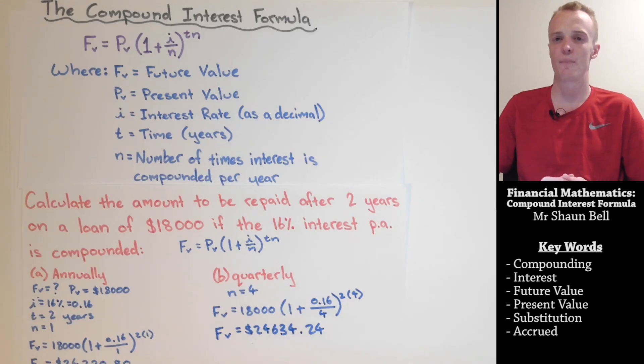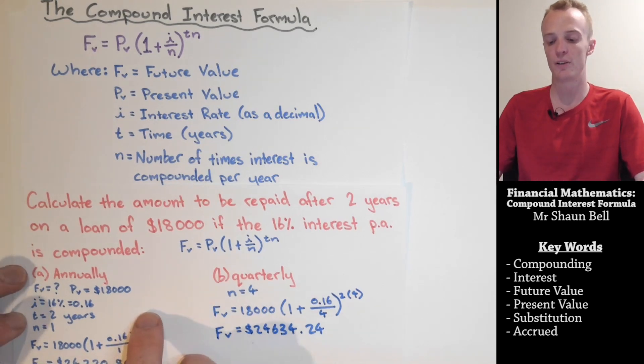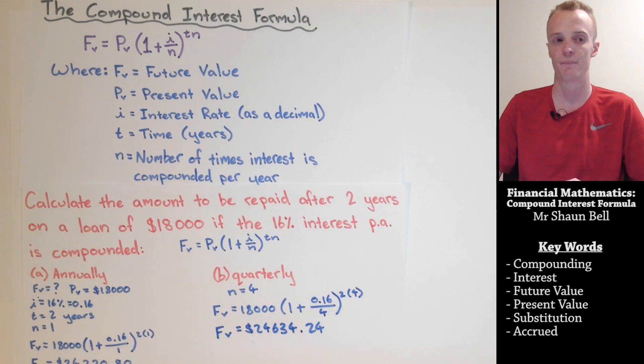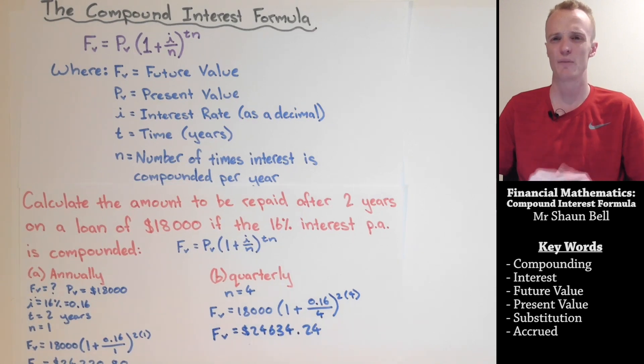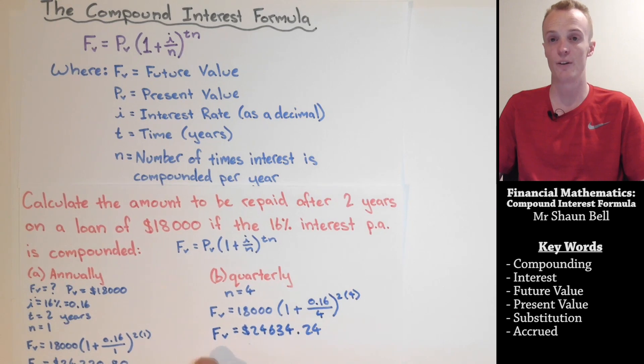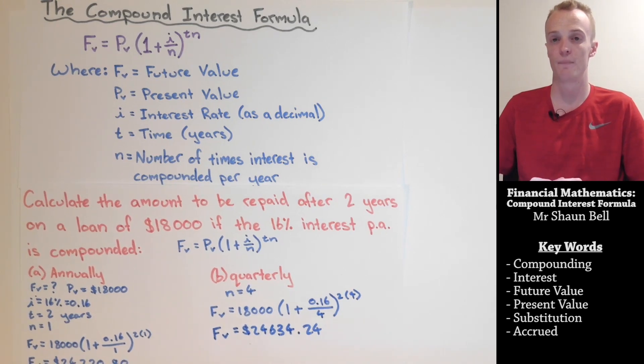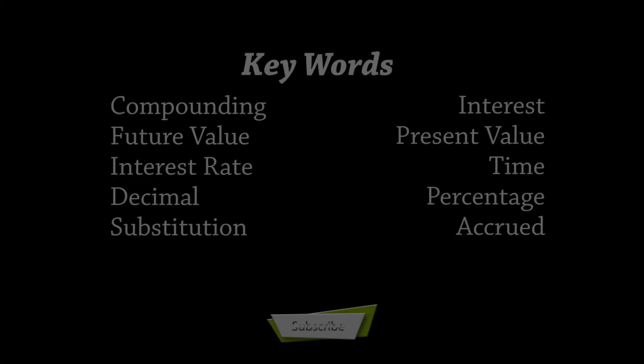So to revise, when using the compound interest formula in a question, begin by identifying the information that you have within that question. Once you've done that, substitute the values or the amount back into the formula. You can then enter this into the calculator to find the final value after that period of time. Just remember, this formula only calculates the final value of the loan after that period of time. If you want to calculate the interest that has accrued, you need to subtract the present value or the starting amount from that final value. Thank you.